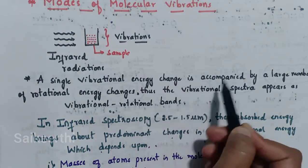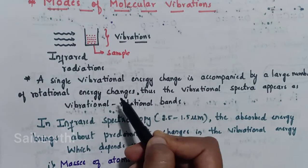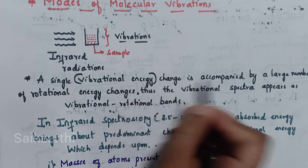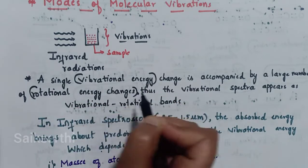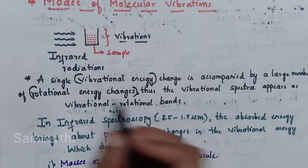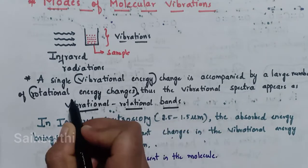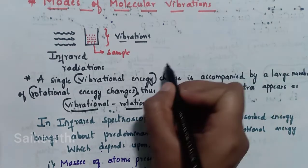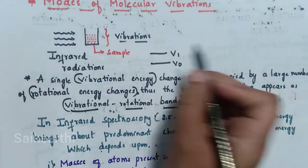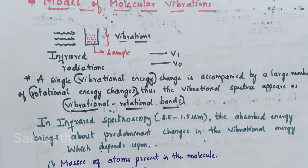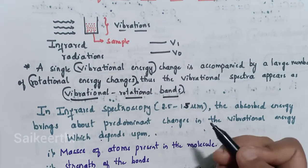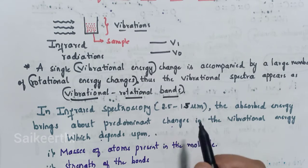A single vibrational energy change is occupied by a large number of rotational energy changes. So this vibrational spectra appears as vibrational-rotational bands. Vibrational energies changing from V0 to V1 involves a large number of rotational energy changes, so the vibrational spectra appears as vibrational-rotational bands.